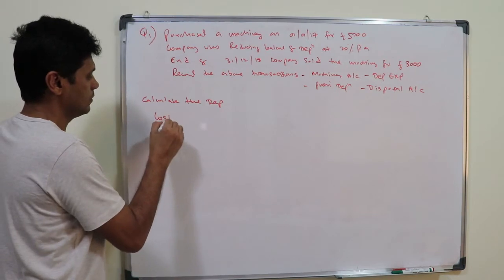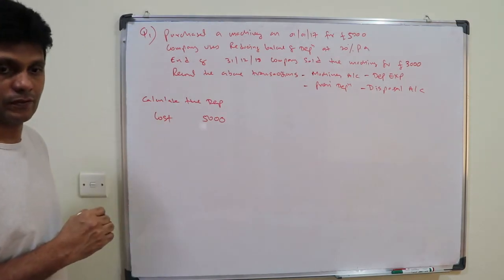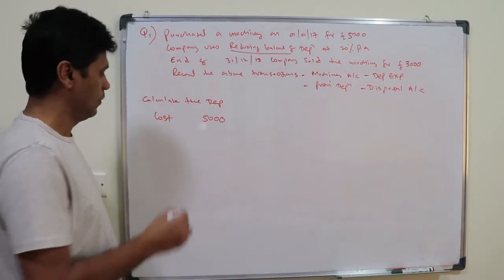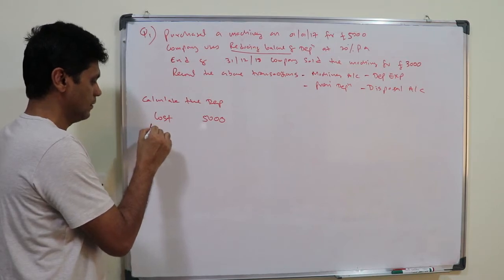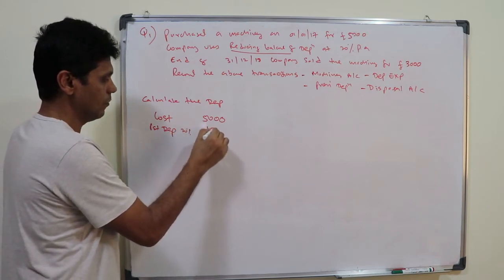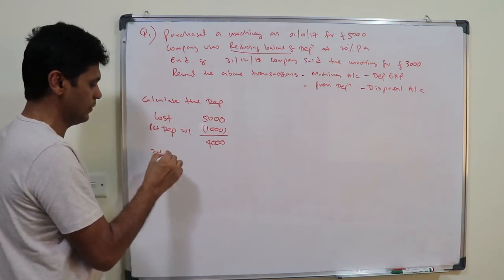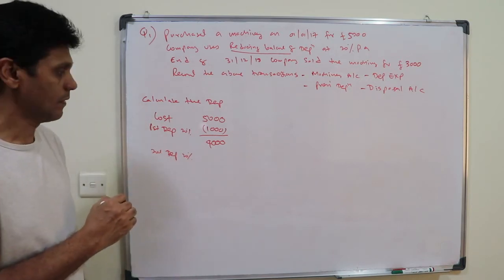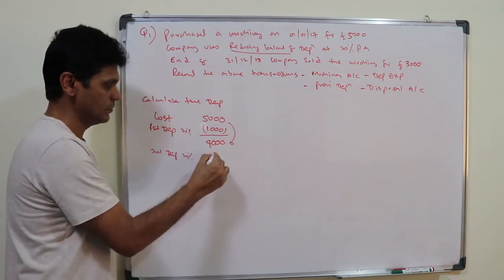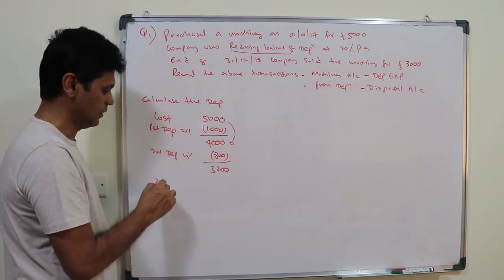The cost is five thousand pounds. Under the reducing balance method, first year depreciation will be 20 percent on five thousand, which is one thousand, leaving a balance of four thousand. Second year depreciation will be 20 percent on four thousand — the reduced balance — which will be eight hundred, leaving three thousand two hundred.